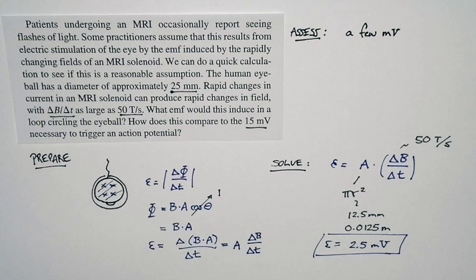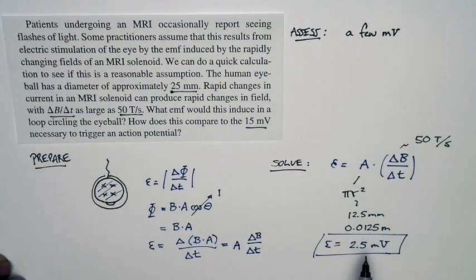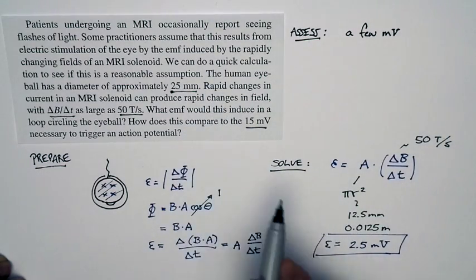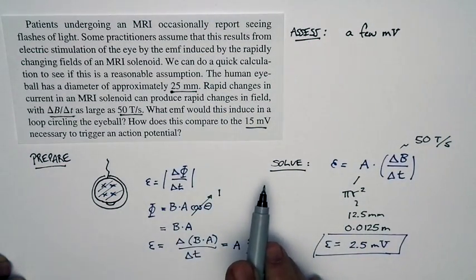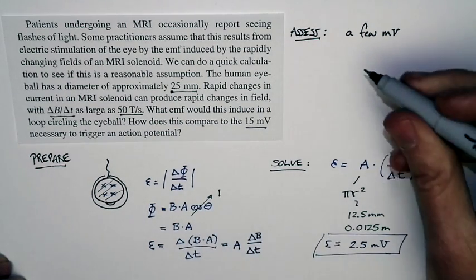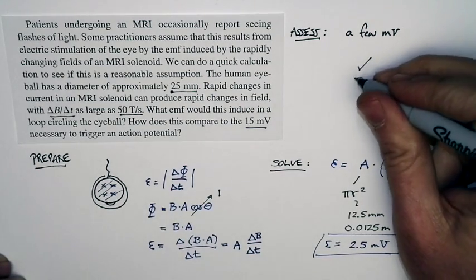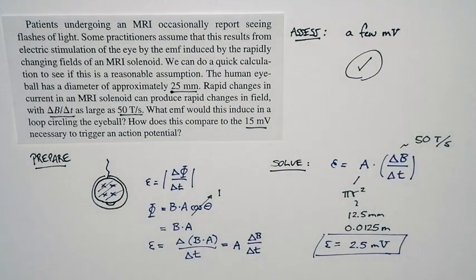Now let's do an assessment. We said at the start of the problem that we expected our final result to be on the order of a few millivolts. So then, particularly sensitive individuals or if something else was going on, might expect to see flashes of light. But people wouldn't be seeing them regularly. And so our final result matches our expectations. So the problem works the way that we know the world works.